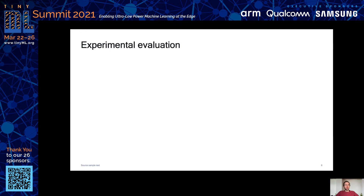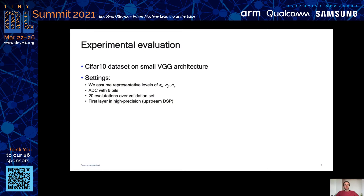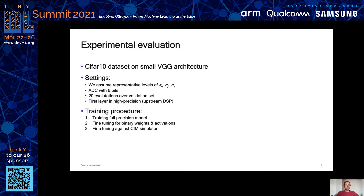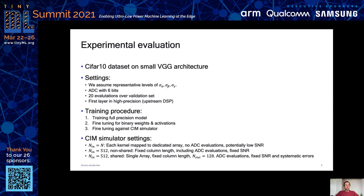To show the need for such a holistic approach to simulation, we study CIFAR-10 on a small VGG architecture. We assume some characteristic hardware with 6-bit resolution for the ADCs, and we report results across 20 evaluations. We first train a high-precision model, then fine-tune a binary model, before fine-tuning against the CIM simulator. We compare three settings. In the first, each kernel is mapped to a dedicated array, and the pop count is directly binarized against the threshold, so no ADCs are required.